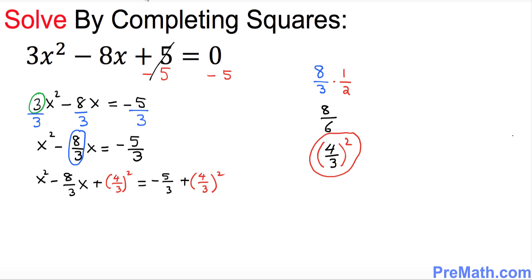Let's go ahead and add this quantity 4 over 3 squared on both sides. Now I want you to focus on the left hand side. This represents a complete square of x minus 4 over 3 squared. Now you might be wondering how did I get that one? This x showed up right up here. This 4 over 3 just came over here and this negative sign, whatever you see in the middle, whatever this sign.